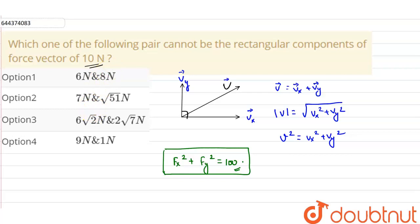Now talking about the first one, so 6 newton and 8 newton, this will be equals to 36 plus 64, this is 100, so it is satisfying the relation.